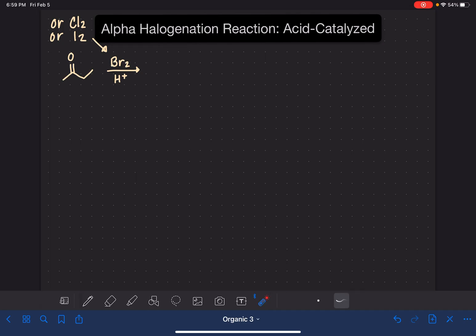There are two possible products for the alpha halogenation reaction. When you have an asymmetrical ketone, such as this one, you can and you will place the halogen on either one of the alpha carbons. So for this reaction, if we're not thinking about stereochemistry, there are two possible products. The major product is the product that is formed from the halogen being placed on the alpha carbon that is the most substituted. So in this case, the first product I drew is going to be the minor product, and the second one will be the major product.